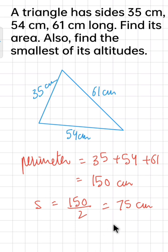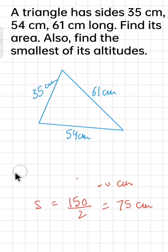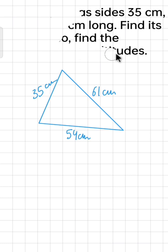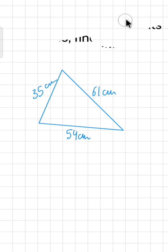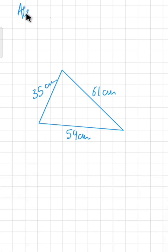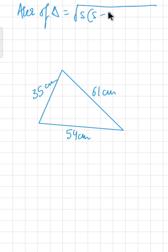We are going to use Heron's formula because all sides of the triangle are given. We have already found the perimeter and semi-perimeter. Now, the area of the triangle equals the square root of s times (s minus a) times (s minus b) times (s minus c).